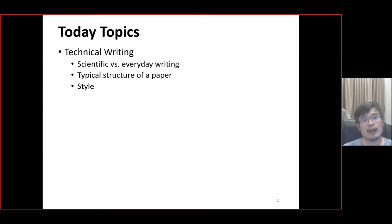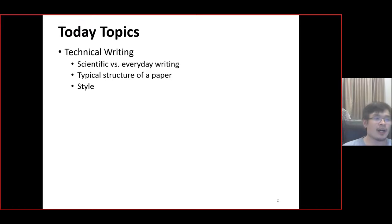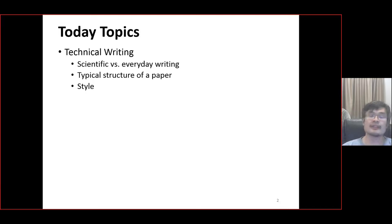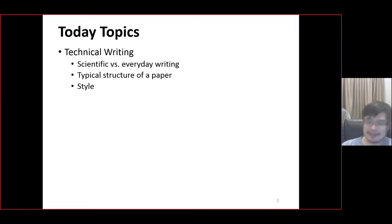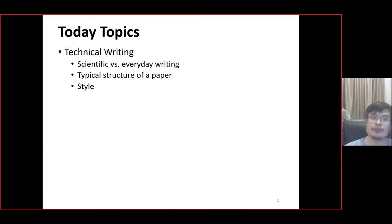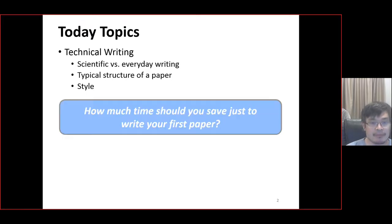Today's topic is technical writing. This doesn't include just the paper — it also includes everyday writing, but everything on the technical side. We'll cover the typical structure of a paper and style, which is really important. When you read more and more papers in your literature review, you can see that different areas have their own style, and different research groups also have their own style. How do you develop your own style so that you convey your findings while also representing yourself as a researcher?